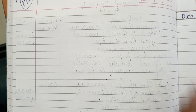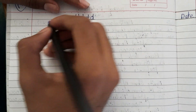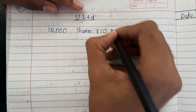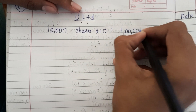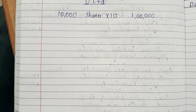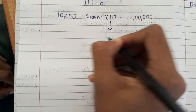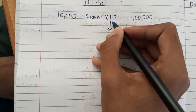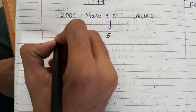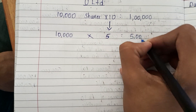They have given the balance sheet of U-Limited company. In this company there are 10,000 shares, each with a face value of Rs.10, making the total share capital Rs.1,00,000. Now, the first scheme tells us we need to reduce this share value to Rs.5 per share, so 10,000 shares at Rs.5 each gives Rs.50,000.